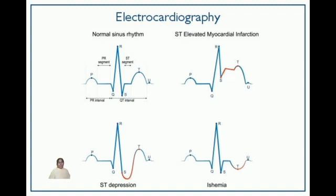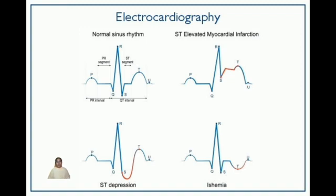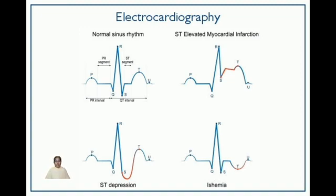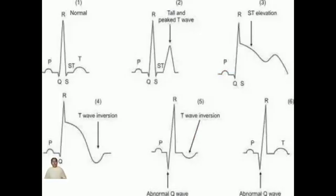Analyzing these components aids in identifying abnormalities in the heart's rhythm, such as arrhythmias, which can have serious implications. The R-wave represents the peak of electrical activity during ventricular contraction. The S-wave signifies the completion of ventricular depolarization. Myocardial infarctions, or heart attacks, can also be identified through ECG analysis.